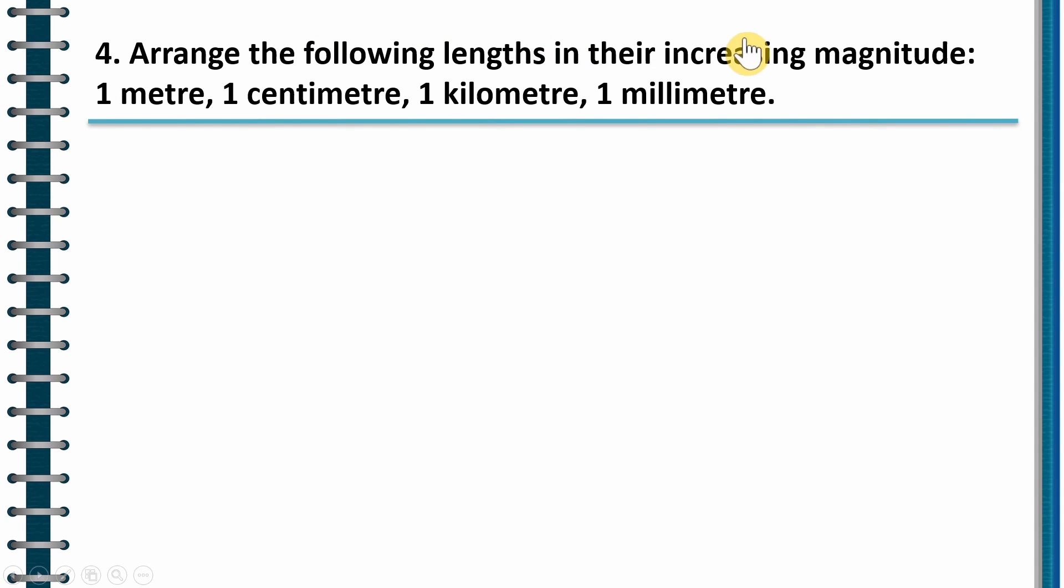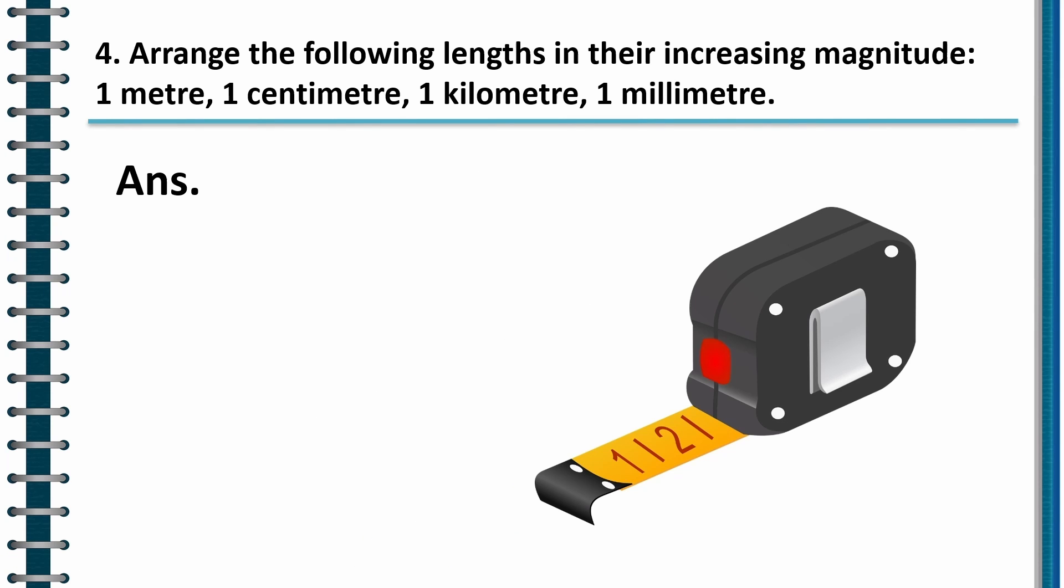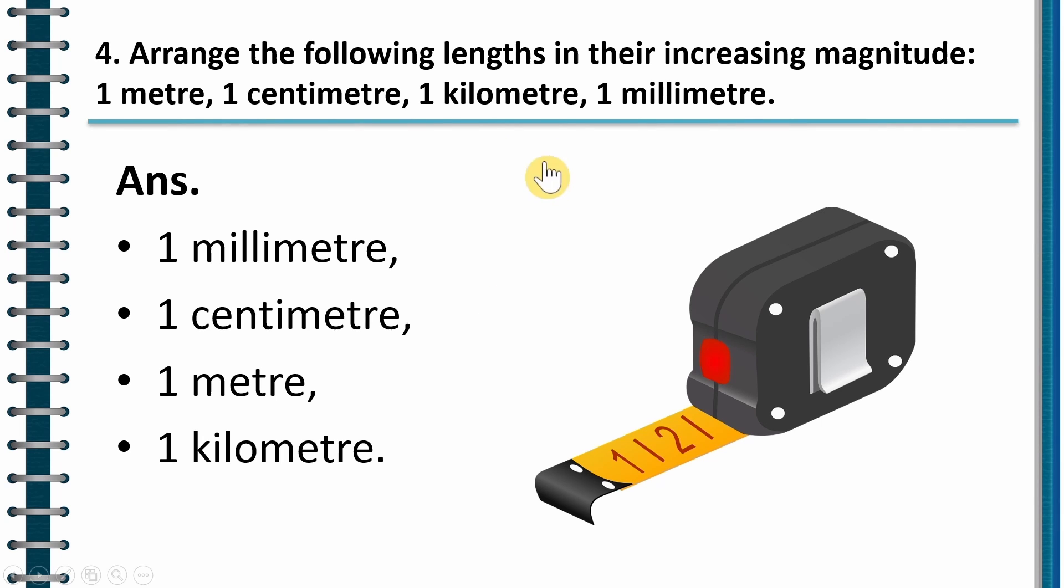Next question: Arrange the following lengths in their increasing order of magnitude. So first should be the smallest. Correct? In this, the smallest is 1 millimeter, and then there should be 1 centimeter, and then 1 meter, and finally there should be 1 kilometer. Let us check whether we are correct or not. So this is a measuring tape and the answer is 1 millimeter, 1 centimeter, 1 meter and 1 kilometer. So we were correct. Smallest first and biggest at the end. By the way, for what purpose do we use measuring tape? Right, for measuring length or height of the object.